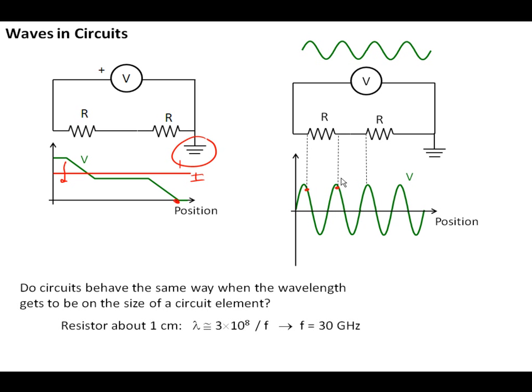So a resistor is about one centimeter, and the wavelength of one centimeter is simply the speed the wave would move, which we estimate to be about the speed of light, divided by the frequency. The frequency in this case is about 30 gigahertz, much higher than you would ever use in a laboratory. Most of the time you don't have to worry about this, but at some points these things become important.